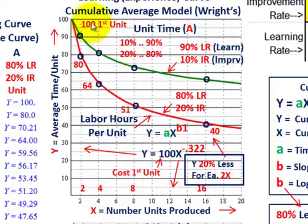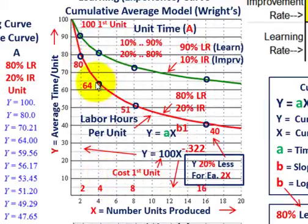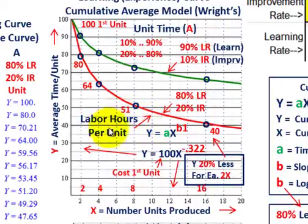Starting with the first unit at 100 hours, the second unit is at 80 hours — that's 20% less for each time we double our output. Going from 2 units at 80 hours to 4 units, we move down to 64, which is a 20% reduction in average time. From 4 to 8 units, we go from 64 down to 51 — again a 20% reduction each time we double output. This is what we're plotting as our labor hours per unit curve.